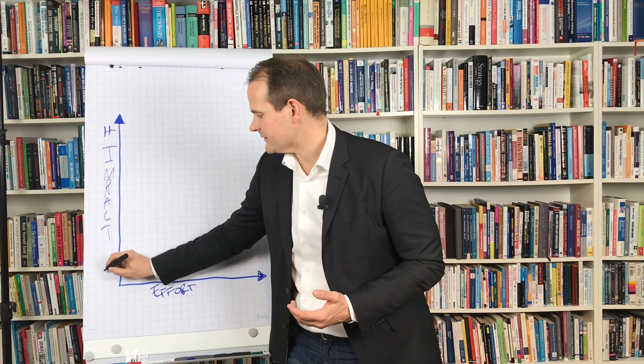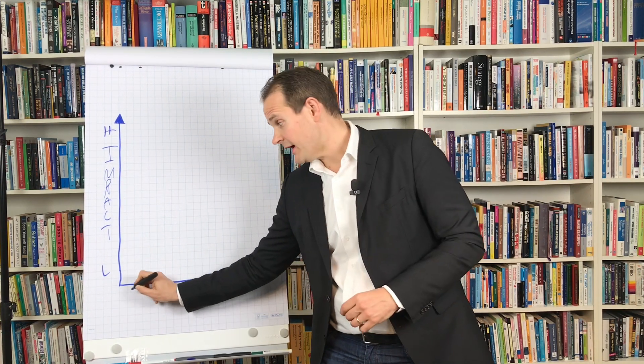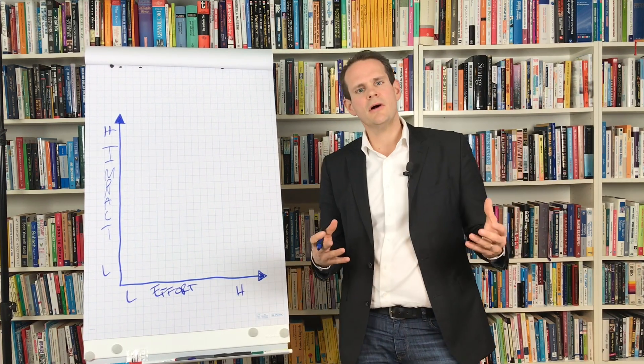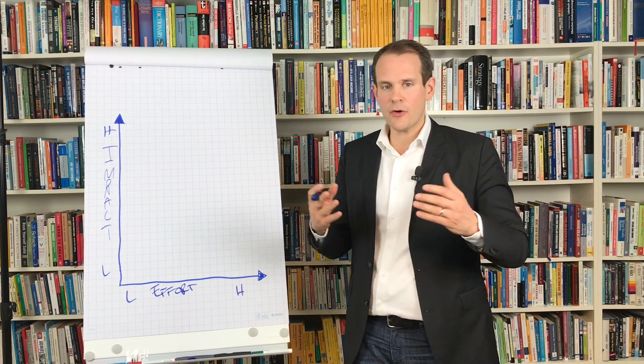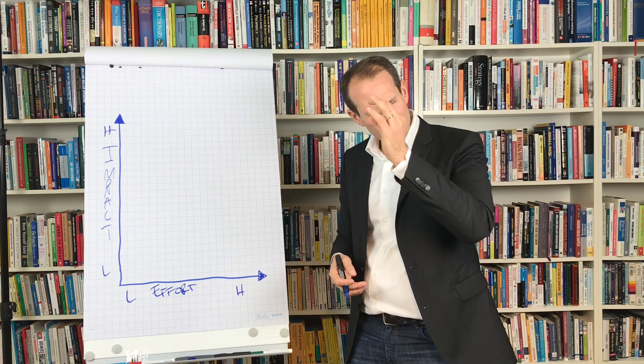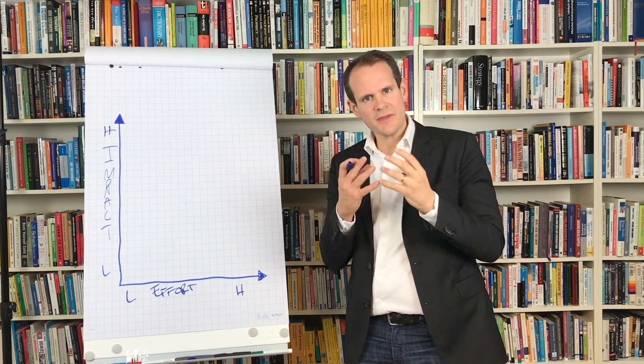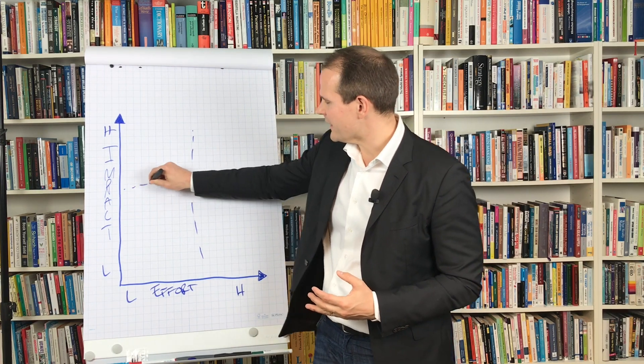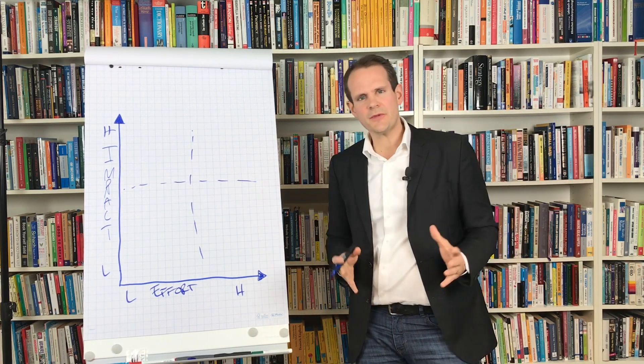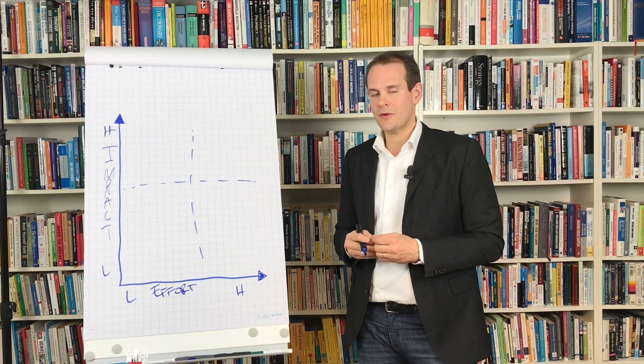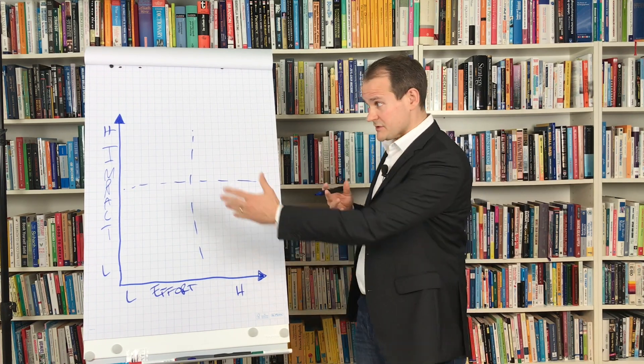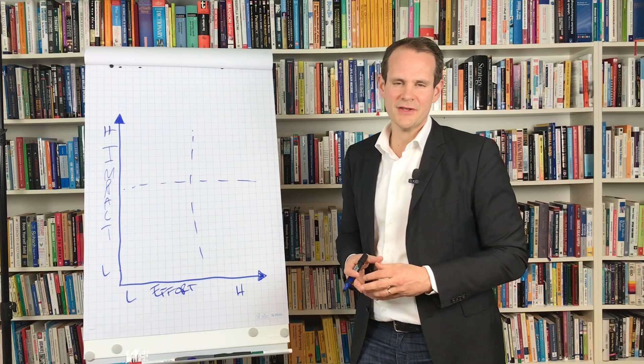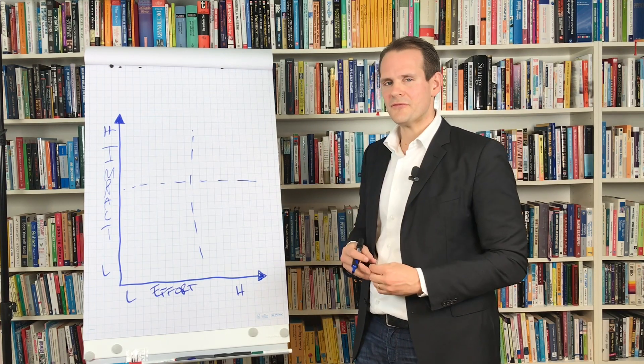That could be high impact and that could be low impact. That could be low effort and high effort. And then, as in all of these two-by-two matrices, again oversimplification, but what they help us is to come to the essence of a problem. What you always do is look at where would that fall in. And of course for your specific problem or idea, one has to analyze what is the right scale and so on. But in general, as usual here in two-by-two matrices, we can find four fields.